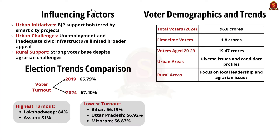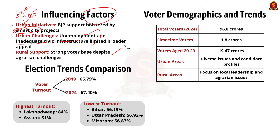Factors influencing these trends include urban initiatives like the Smart Cities Project, which likely bolstered BJP's support among some city dwellers. However, issues like unemployment and inadequate civic infrastructure possibly limited their broader urban appeal. In rural areas, despite agrarian challenges, the BJP managed to maintain a stronger voter base.